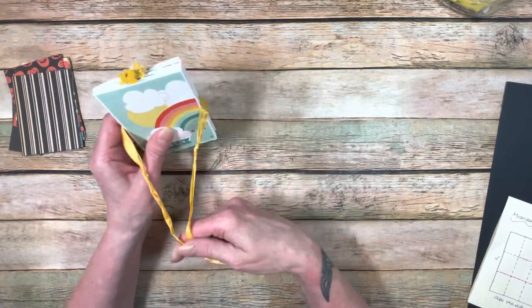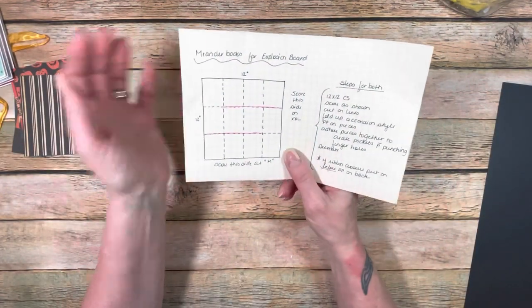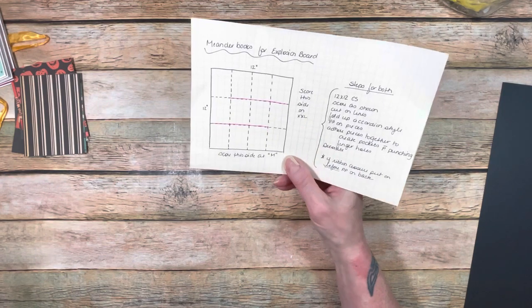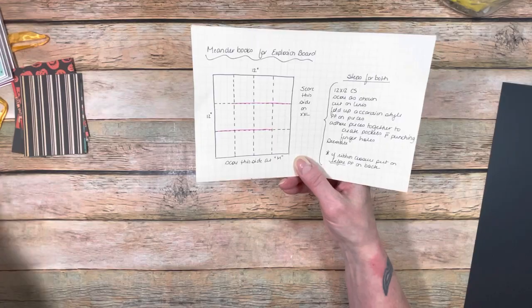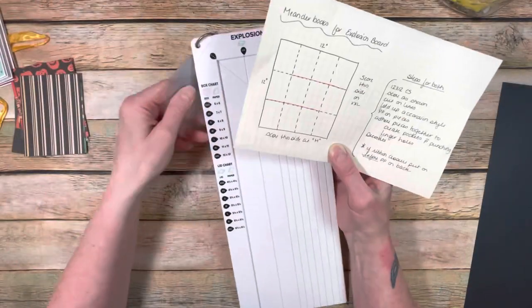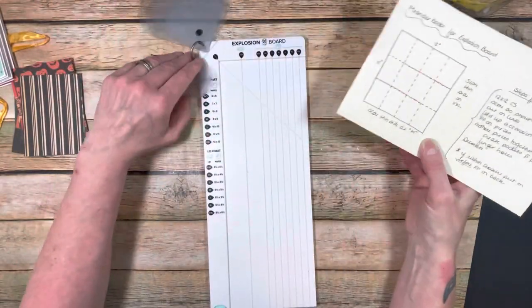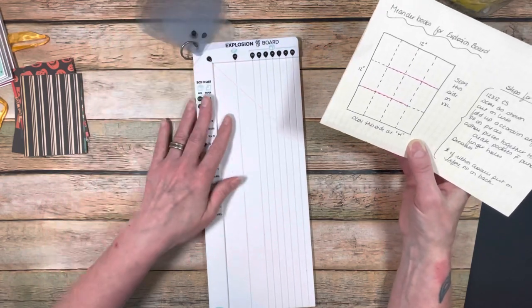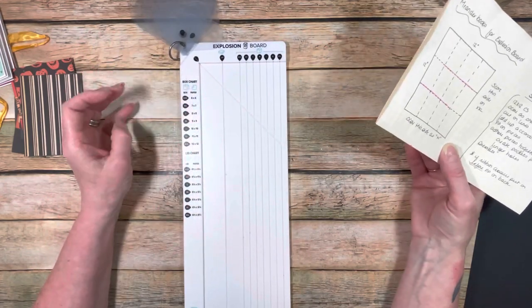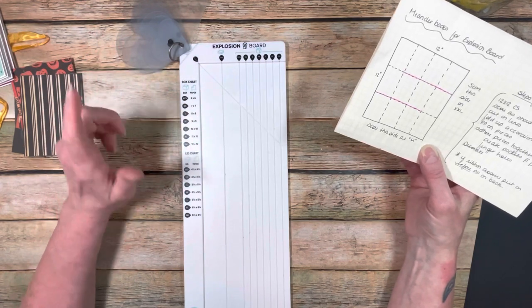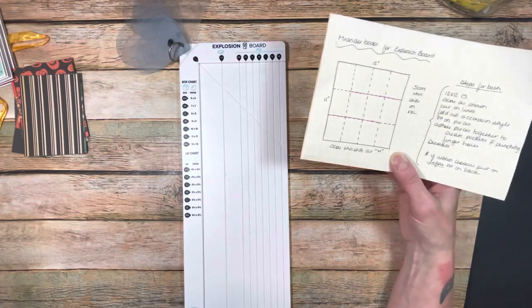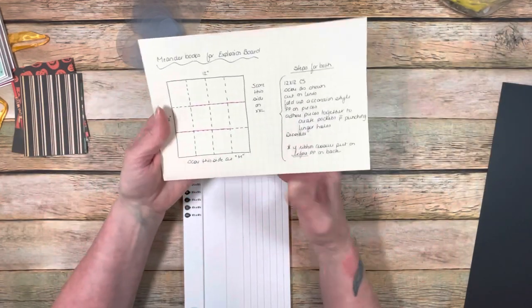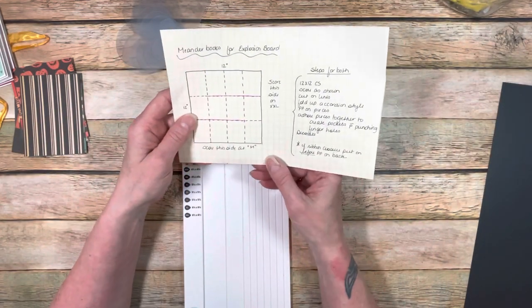So again this is called a meander book. Now let me show you how to make this. This is really easy. I actually did this using my explosion scoreboard. I love my explosion box scoreboard and there's so many different things you can do with it. I'm always coming up with different ways to use it.